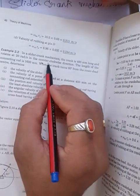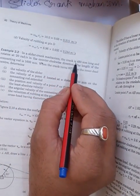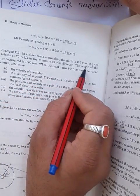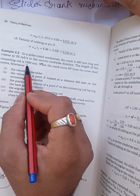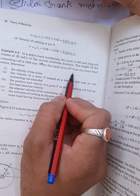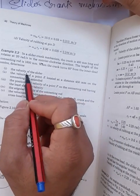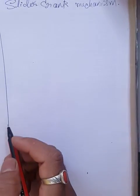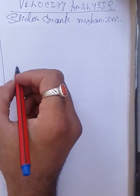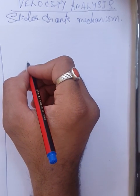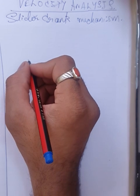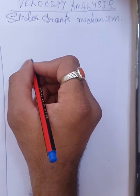In a slider-crank mechanism, the crank is 480 millimeters long and rotates at 20 radians per second in the counterclockwise direction. The length of the connecting rod is 1600 millimeters. When the crank turns 60 degrees from the inner dead center, we need to determine certain values. No inclination is given for the line of centers of the slider, so we assume it is horizontal.